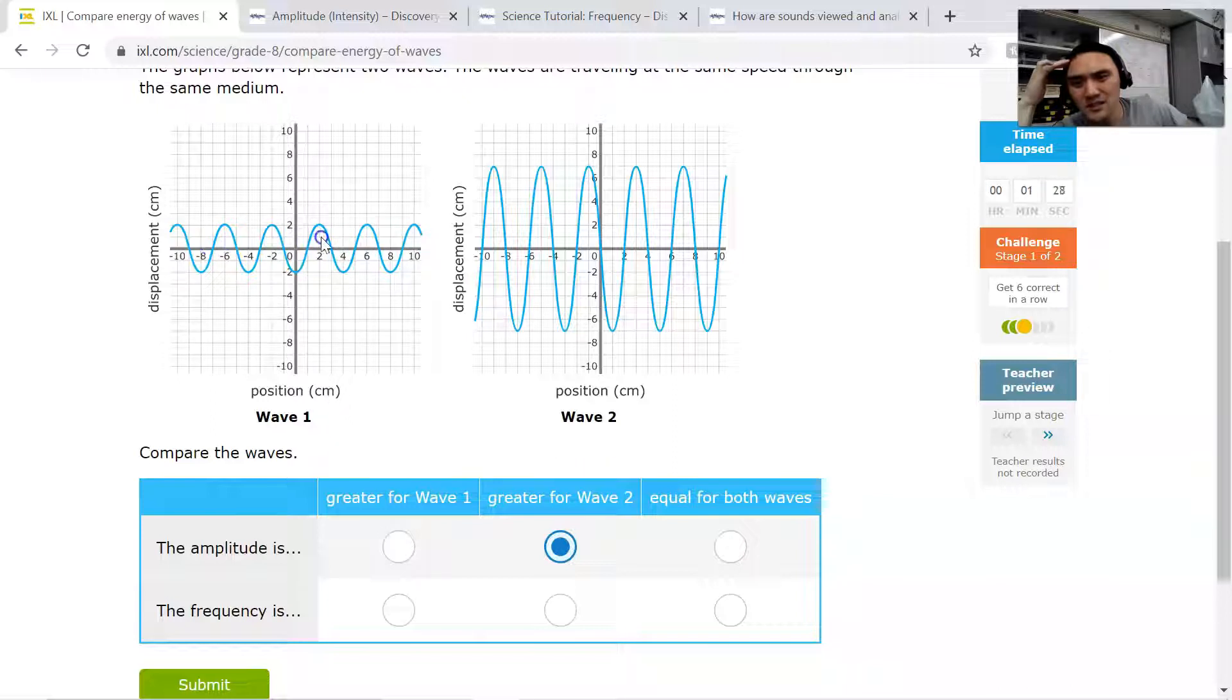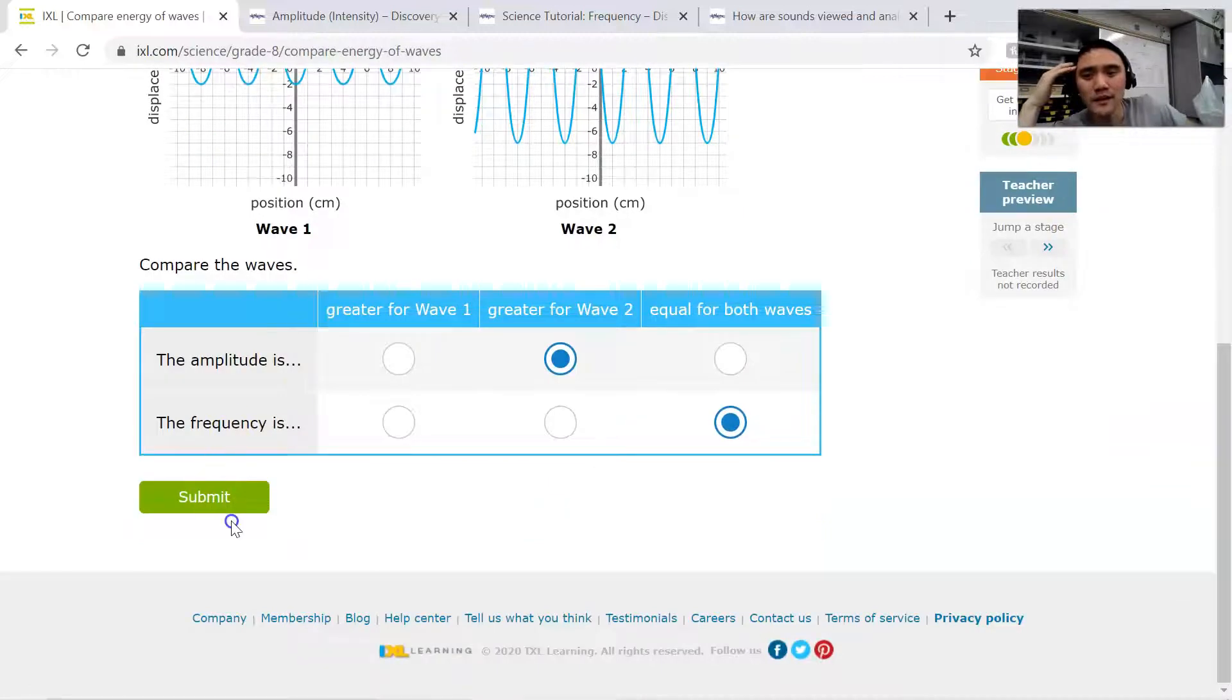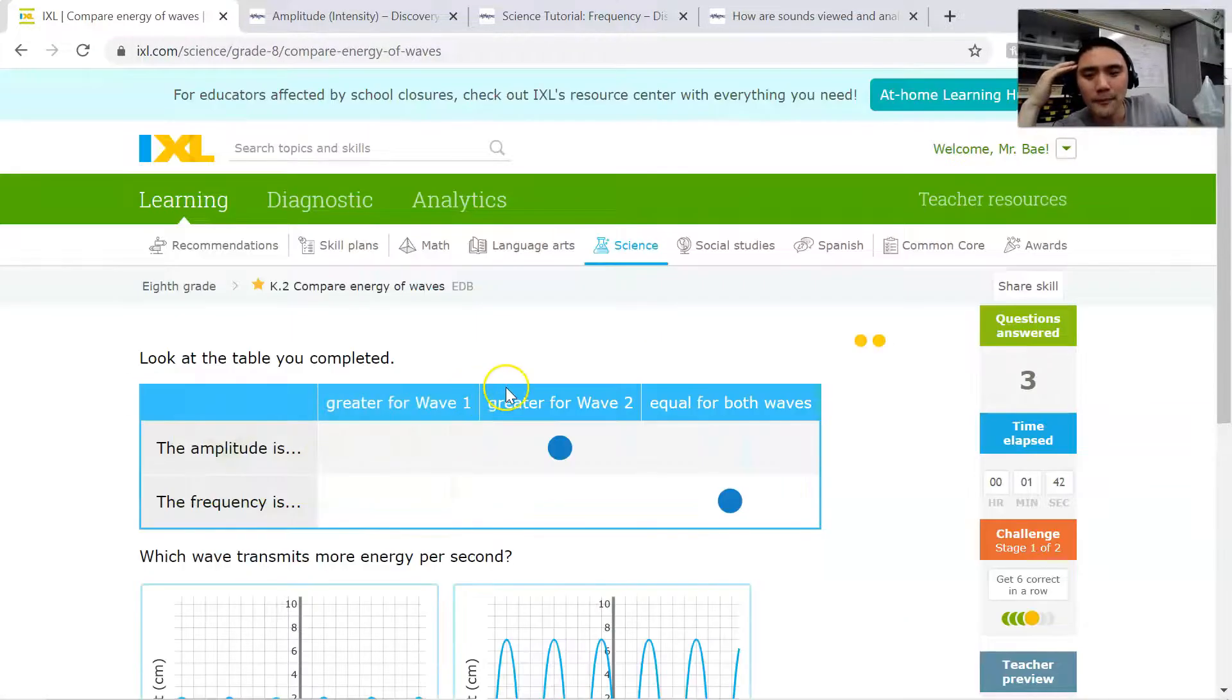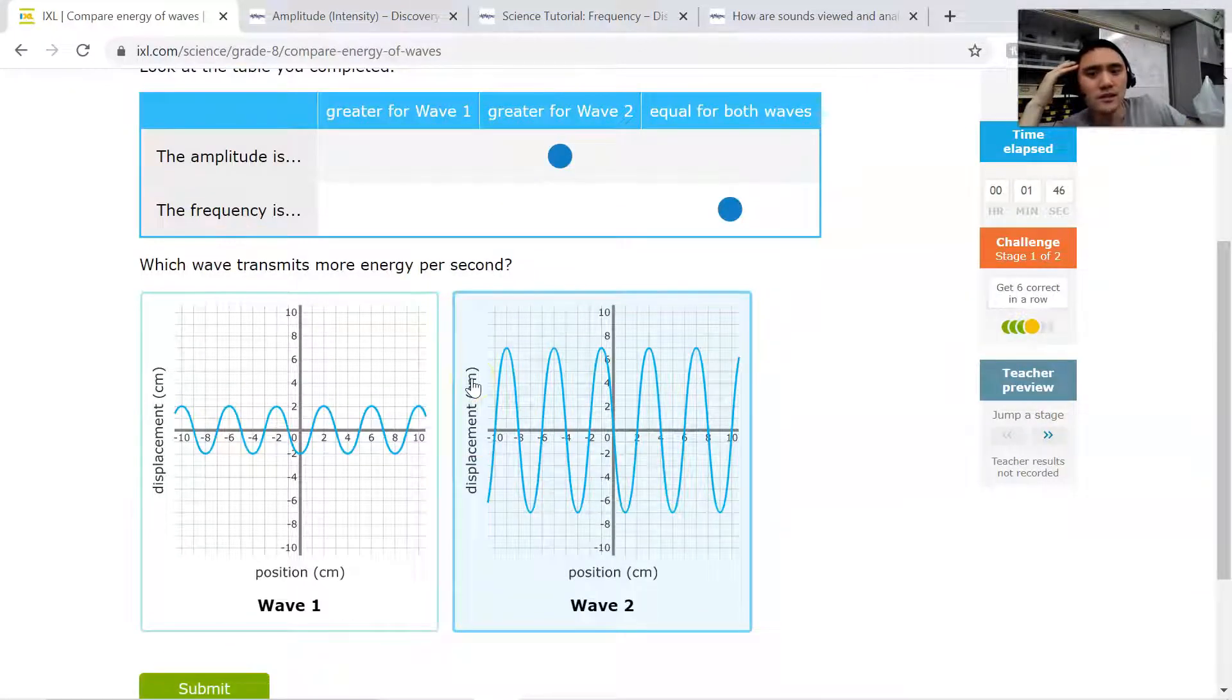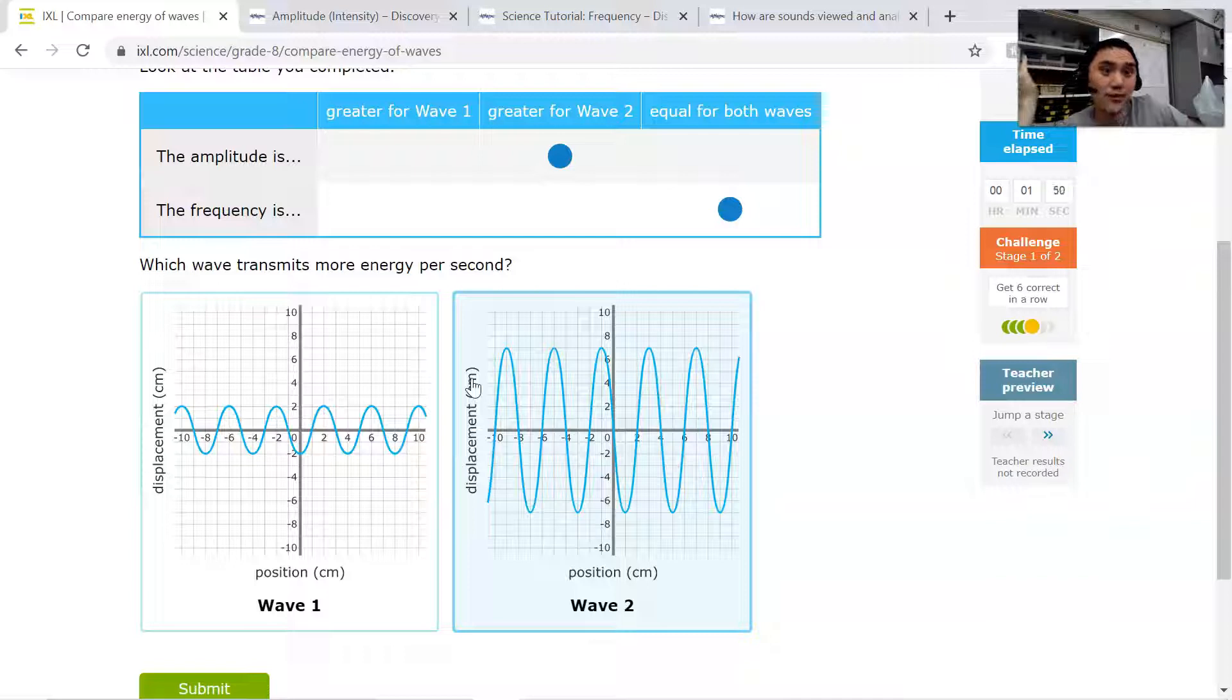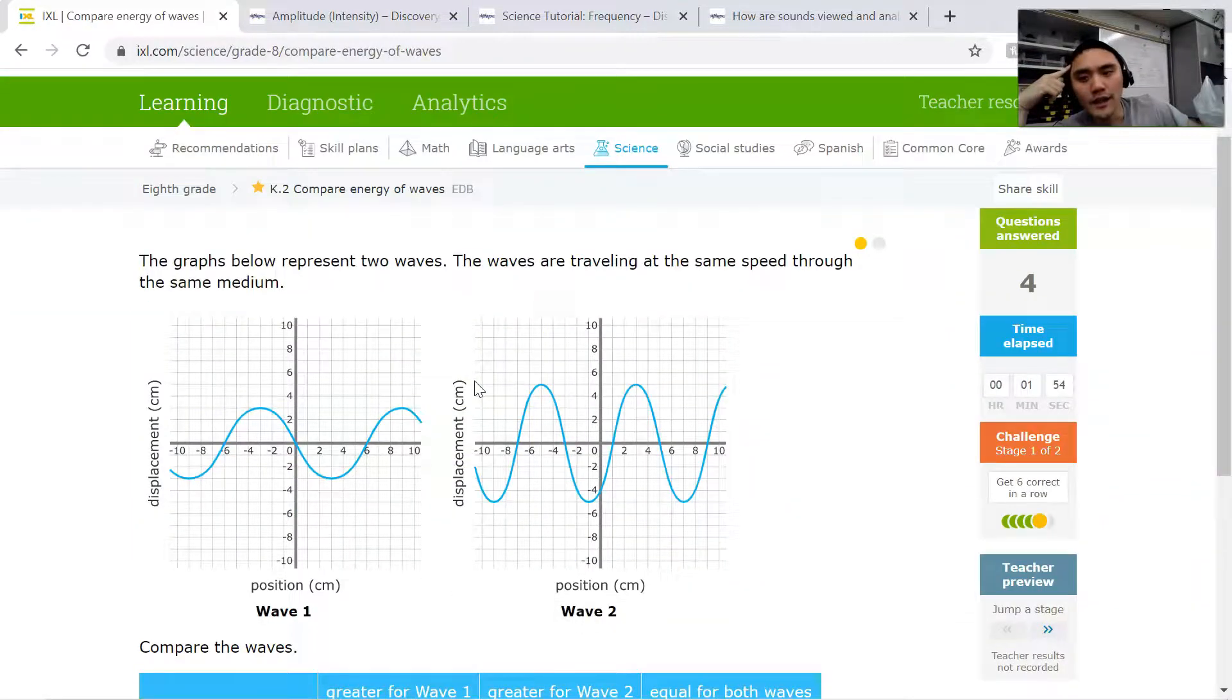One, two, three, four, five and a half. I think they're the same actually. So I'm going to say equal for that. And then which one translates more energy per second? Once again, it needs to have higher amplitude or higher frequency or higher both for frequency and amplitude. So that's wave two. All right. Next one.